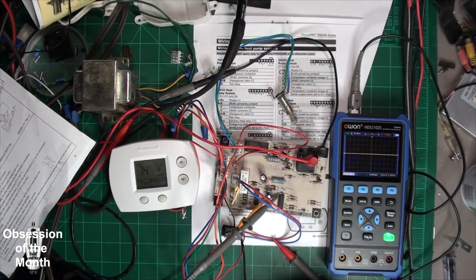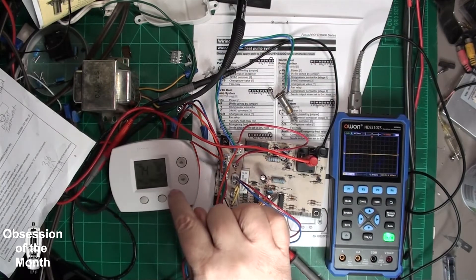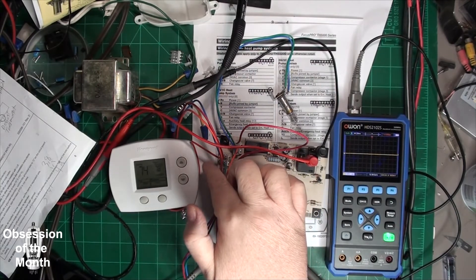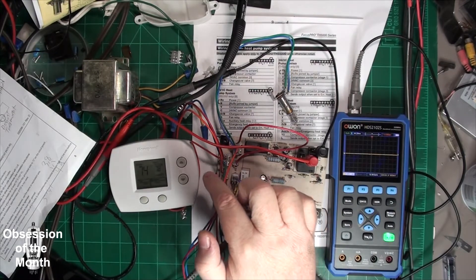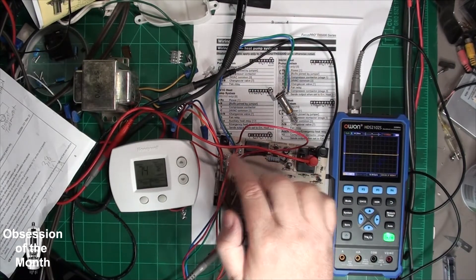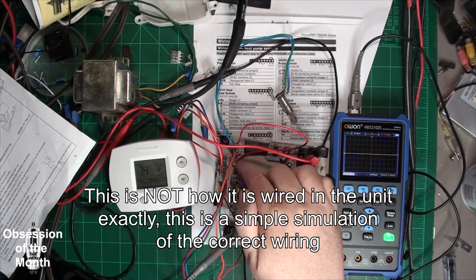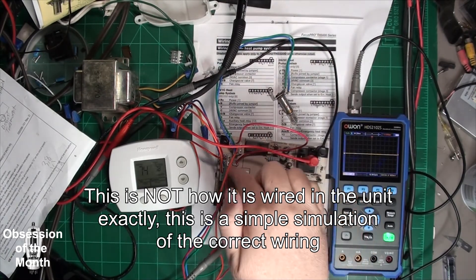The basic gist of this is when heat is turned on, power comes into the R and the Y. And this T1 connection has to receive power. And so I've got the T1 hooked into the Y.